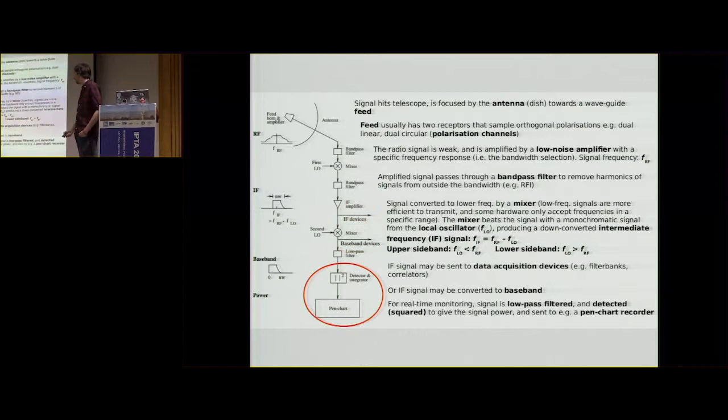But in the old days, we might just low pass filter it and square the signal, send it to a pen chart recorder. This is how the original pulsar observations were done, where you just have sheets of paper with a little pen chart just ticking off the signal as it comes in. But we end at one of these points down here, with baseband data.